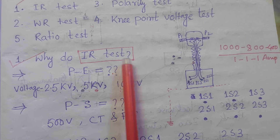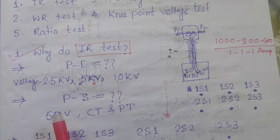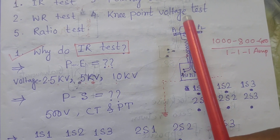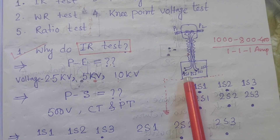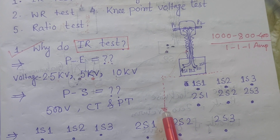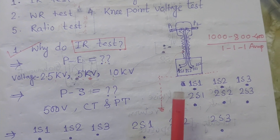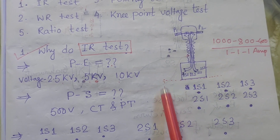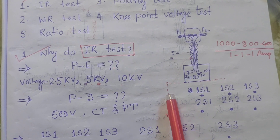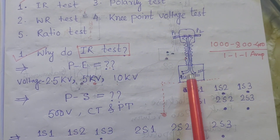For the IR test, first take a digital megger or hand megger and measure the insulation resistance between the primary and earth. The CT is installed on a structure which is permanently earthed by a flat - 5/6, 6/6, 7/5, 8 - different types of flats are used for permanent earthing of the structures. Between the earthing point and P1 or P2 side, you will get the primary-to-earth insulation resistance.